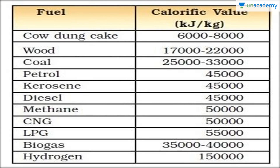Here are the calorific values of the fuels we use in our day-to-day life — fuels I have already discussed in a previous lesson on petroleum-based solid, liquid, and gaseous fuels. Cowdung cake has around 6,000 to 8,000 kilojoules per kg. Wood has around 17,000 to 22,000. Coal has around 25,000 to 33,000. Petrol has around 45,000 kilojoules per kg, and kerosene and diesel are similar.